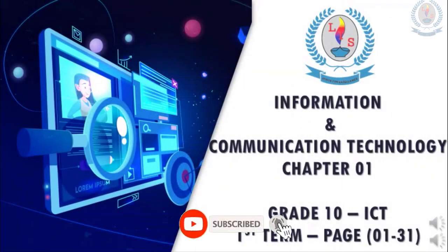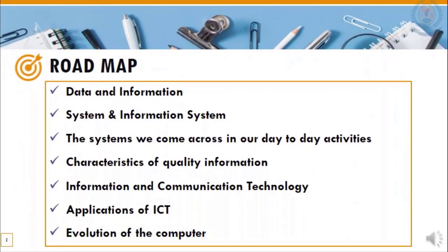Hello students, hope you all are doing well. This is ICT for Grade 10, first term, first chapter: Information and Communication Technology, page number 1 to 31 in your reading book. Our roadmap covers data and information, systems and information systems, systems we come across in day-to-day activities, characteristics of quality information, ICT applications, and evolution of the computer.